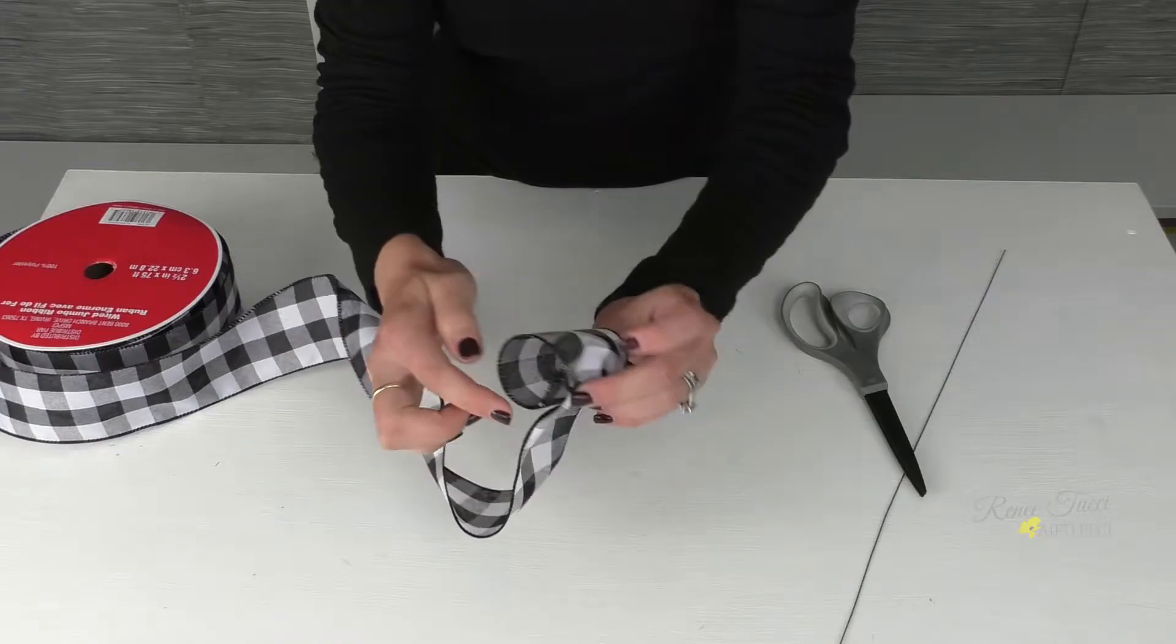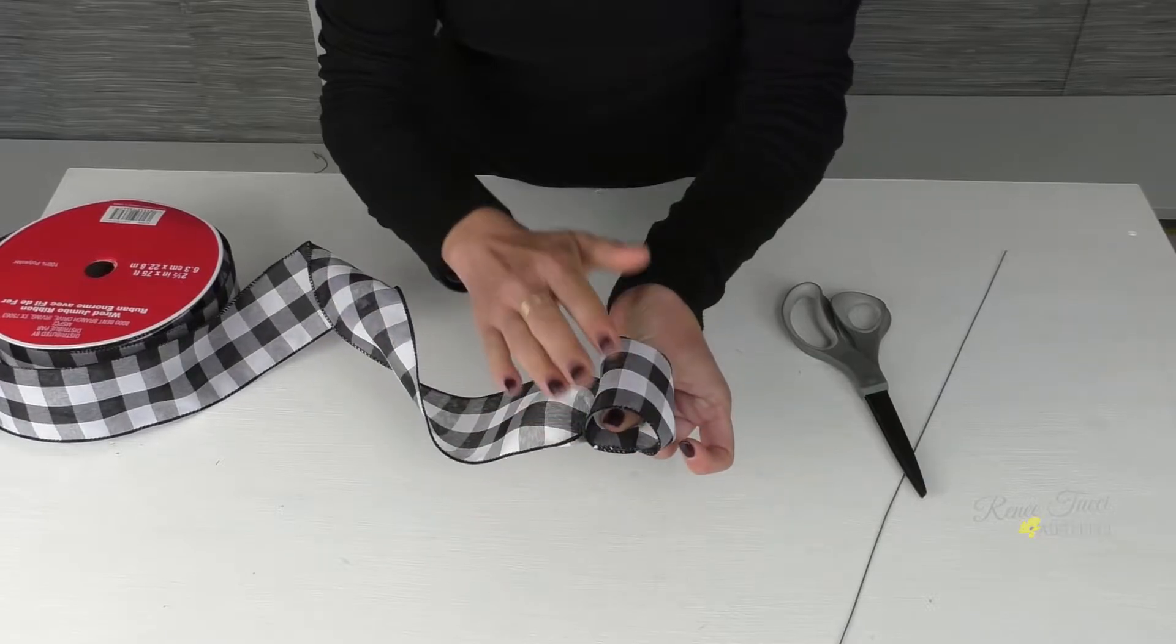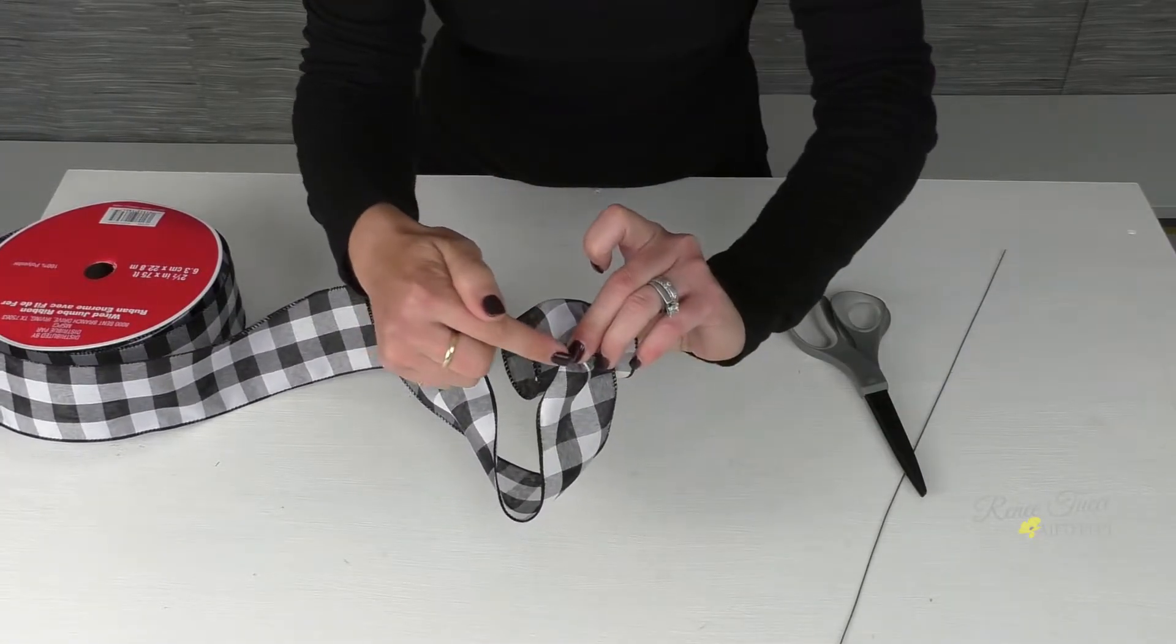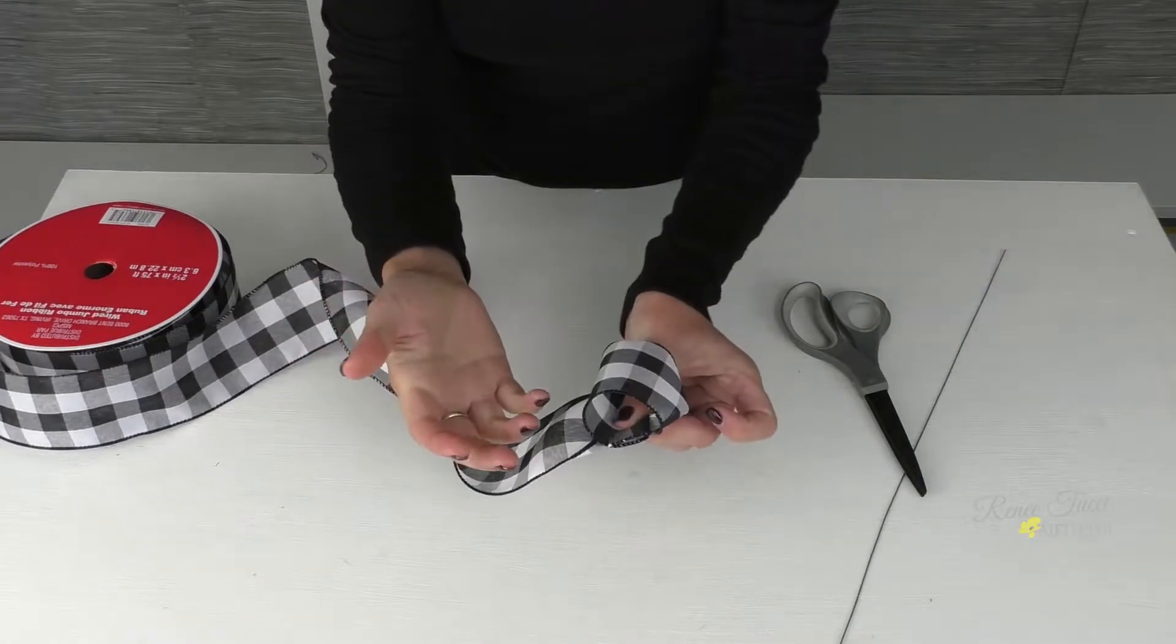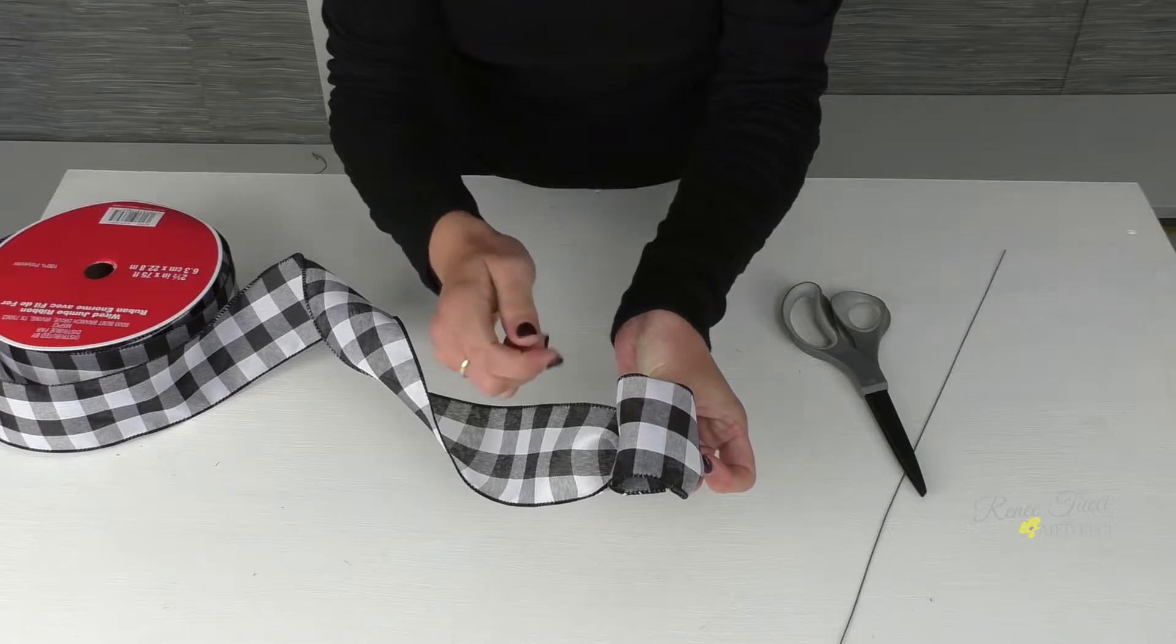And it's also going to give us some structure in the center where I'm holding it. And each time we make a loop, we're going to do that half twist, building this center area, which will give us more structure to wire to when we're finished.